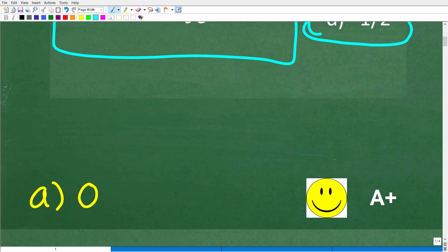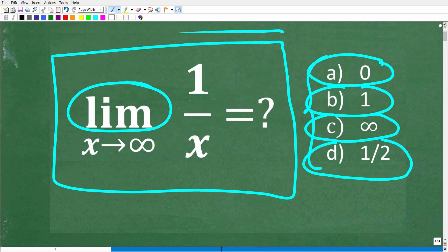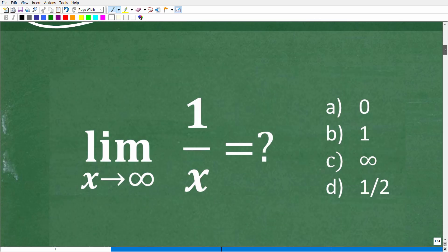Let's take a look at the correct answer. The correct answer is A, zero. All right, now, if you got this right, you definitely get a happy face and an A+. And if you didn't get this right, don't feel bad. This is not that complicated. All right, so let's go ahead and get into the solution right now.